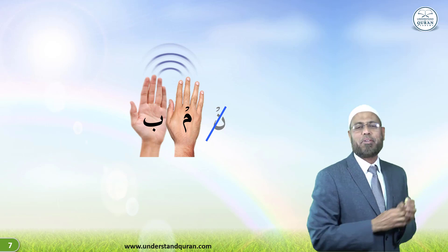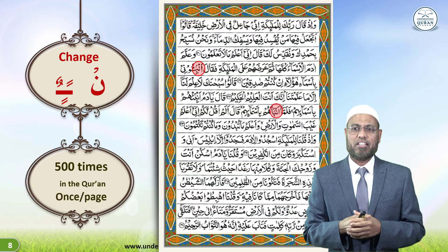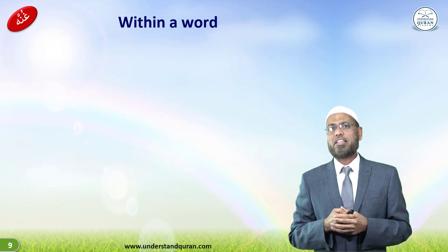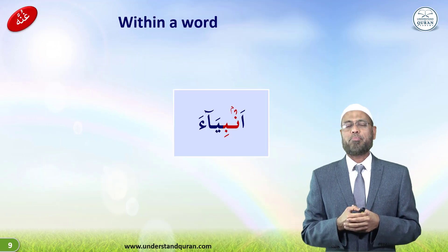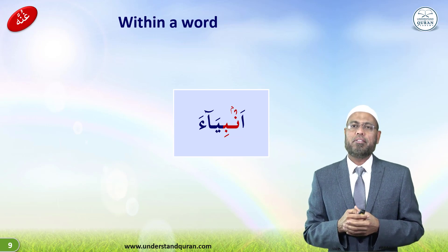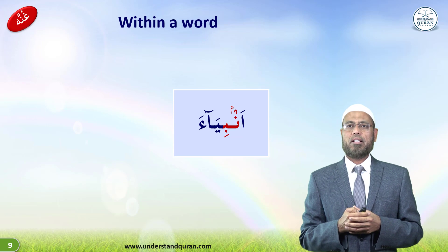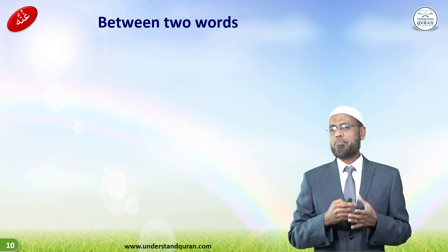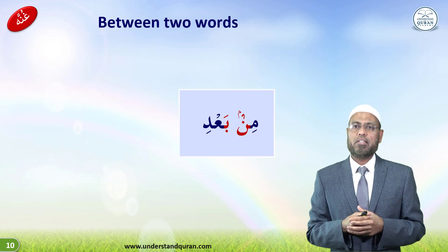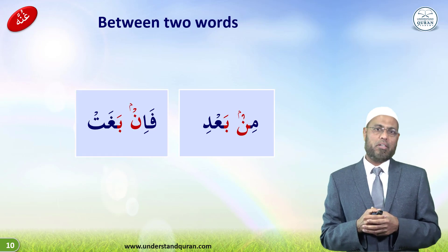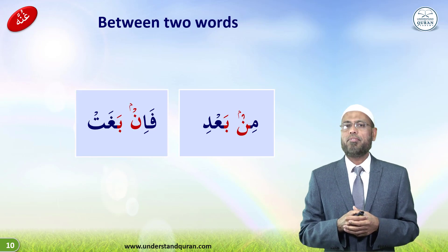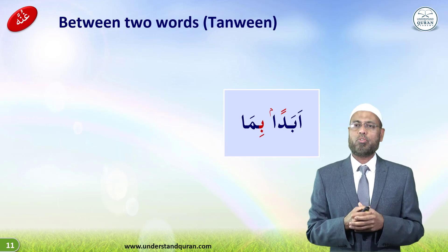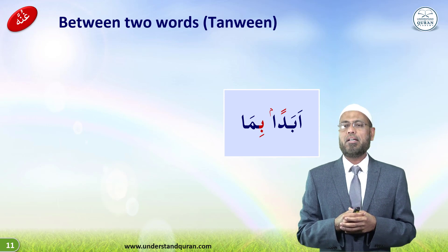This change occurs in the Quran almost 500 times — that is once per page. Let us take the example of within a word — repeat after me. Now let's take tanwin, which is always between two words: 'abadan bima', 'abadan bima', 'abadan bima'.